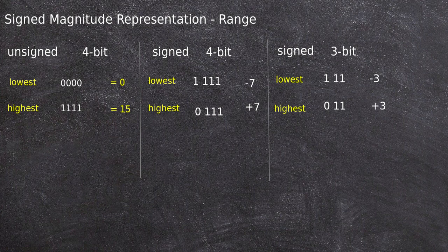When it was unsigned 4-bit representation, the range was 0 to 15. Now when it is signed magnitude representation and 4-bit, the range changes from minus 7 to plus 7.